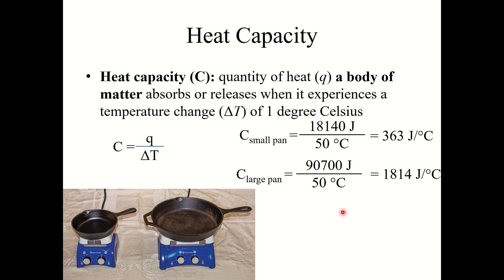It's important to note here that heat capacity is an extensive property. It's an extensive property. The amount of matter that you have affects the property. So heat capacity capital C is defined as q divided by delta t.